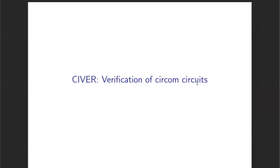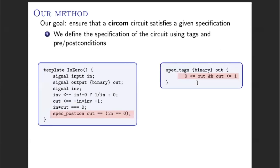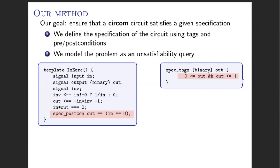Now I'm going to present the intuition of how our approach works. Once we are given a circuit, what we do is use a language based on pre- and post-conditions to state what is the expected behavior of the circuit. For example, for the template IsZero, we state what the expected value of the output is. We can also state what is the expected behavior of each one of the tags of the circuit — here we indicate that any signal with the tag binary is expected to have a value between zero and one. Once we have this specification, we try to verify it by considering the problem as a satisfiability query.